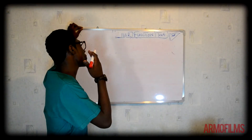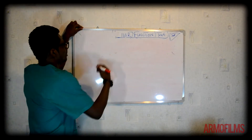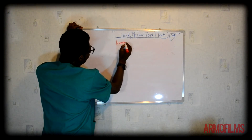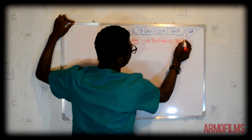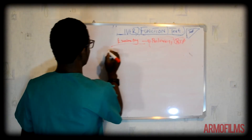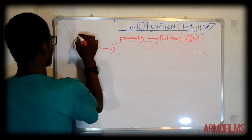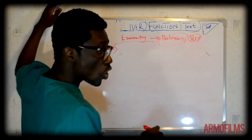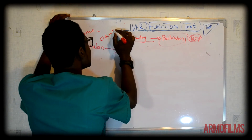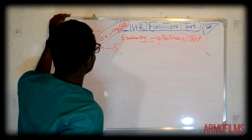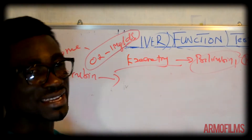Let's jump into the excretory function test of the kidney. We're going to talk about bilirubin. Bilirubin is gotten from heme. The normal concentration of bilirubin in the blood is 0.2 to 1 milligram per deciliter. Any increase above 1 milligram per deciliter will lead to hyperbilirubinemia.